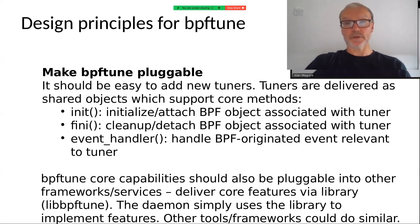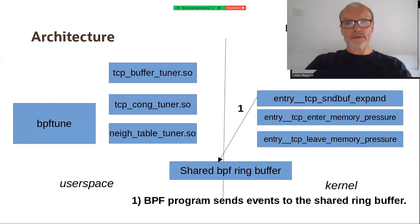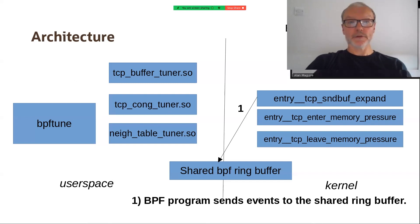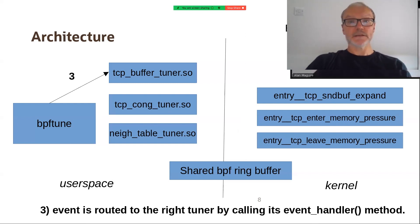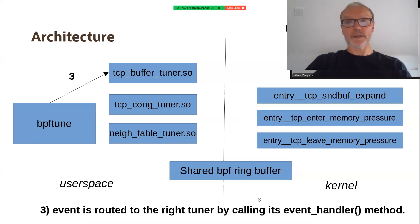Looking at the architecture, we can see on the right-hand side a set of BPF programs attached that are interested in observing events related to TCP send buffer issues. One of the BPF programs sends an event to the shared ring buffer which BPF Tune uses, and that event will have a tuner ID associated with it — in this case the tuner ID of the TCP buffer tuner. This allows us to route the event to the TCP buffer tuner shared object and call its event handler method, so it can process that event — for example, deciding whether to increase a TCP buffer limit.